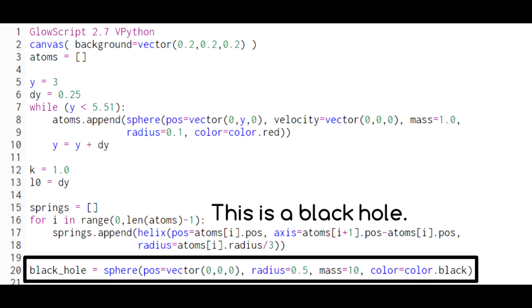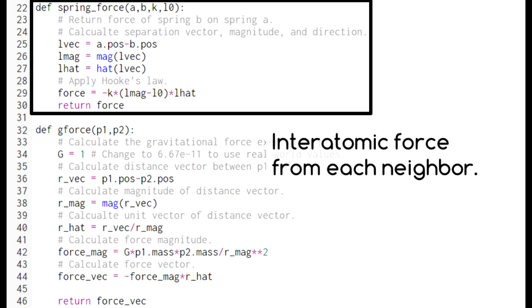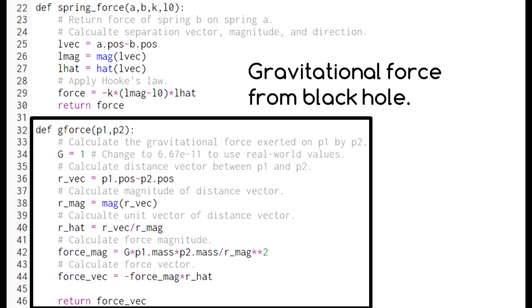Here we create a black hole that will pull our atoms with the gravitational force. Each atom feels two types of forces: a spring force from each of its neighbors, and the gravitational force from the black hole.